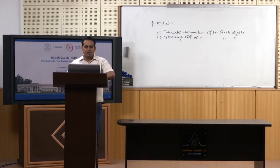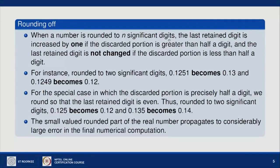Let me tell you how we perform rounding off. When a number is rounded to n significant digits, the last written digit is not changed if the discarded portion is less than half a digit. For instance, rounded to two significant digits, the number 0.1251 becomes 0.13 because 0.0051 is greater than 0.005. Similarly, if you take 0.1249, it becomes 0.12.